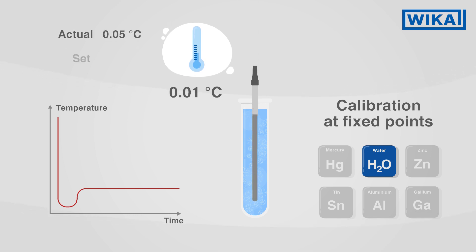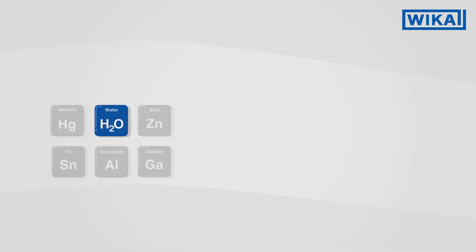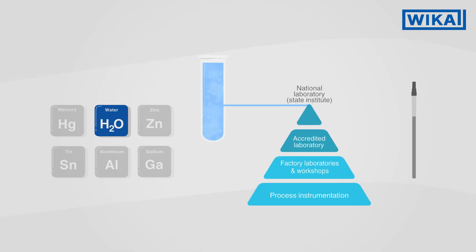On this temperature plateau, the deviation of the test item can now be determined exactly. The fixed point method is suitable for thermometers that must meet high demands for reproducibility and accuracy, and which will themselves be used to some degree as reference thermometers.